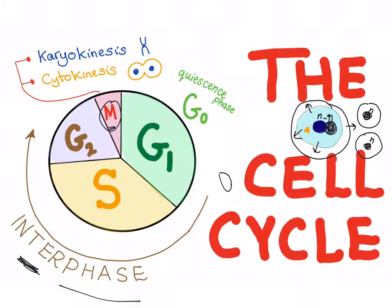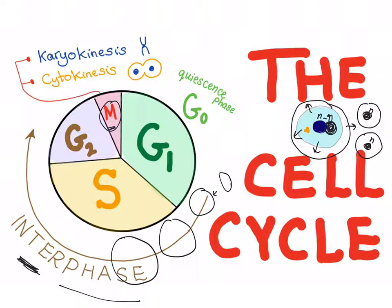In the interphase, the cell will grow in size by accumulating nutrients for the process of replication to occur. In the mitotic phase, the cell will divide from one cell into two cells — this is called mitosis.